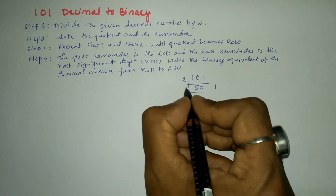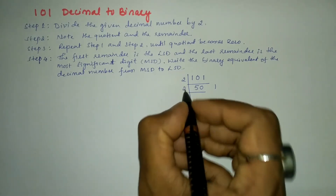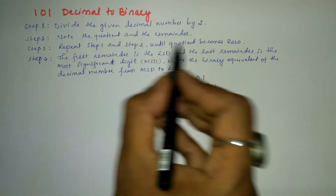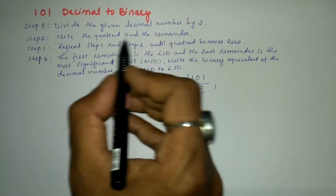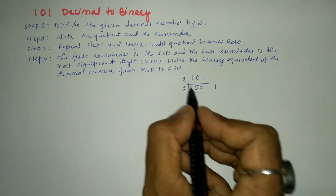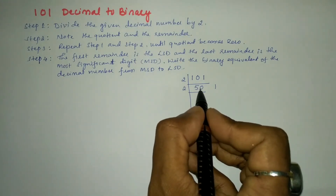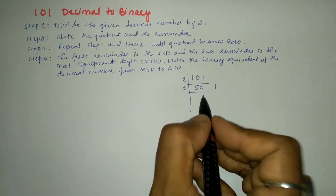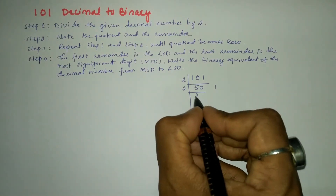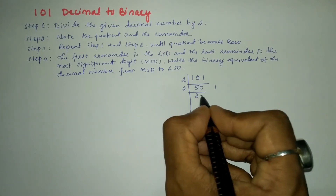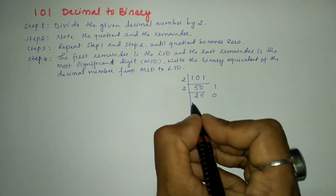Next, again divide this 50 by 2. We have to repeat this step until the quotient becomes 0, noting down the quotient and remainder each time. We go on dividing until we get quotient 0. 2 twos — carry 1, 2 fives are 10, so remainder is 0.